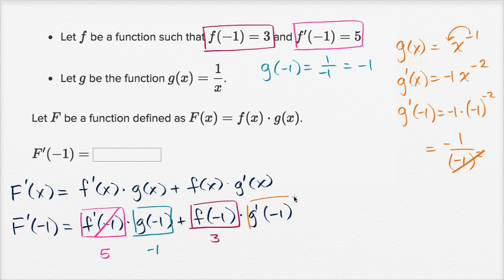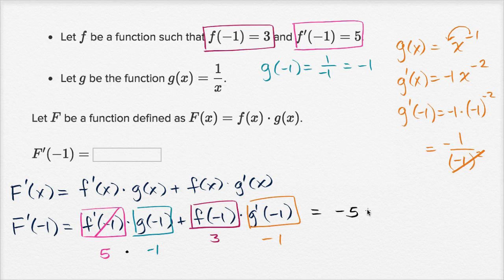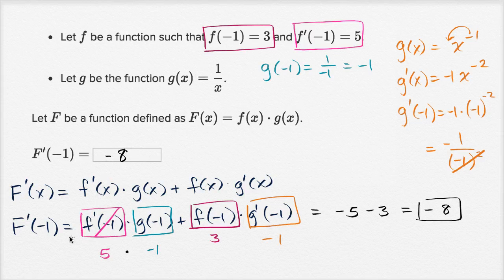So this is negative one. And so we have five times negative one, which is negative five, plus three times negative one, which is negative three, which is equal to negative eight. So capital F prime of negative one is equal to negative eight.